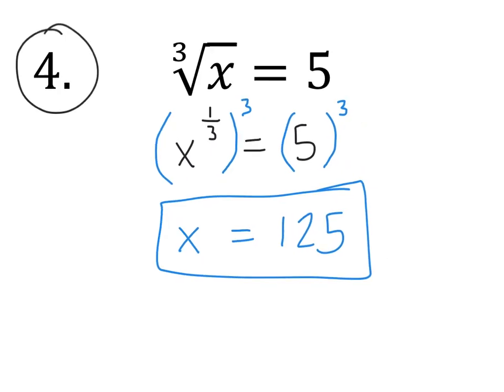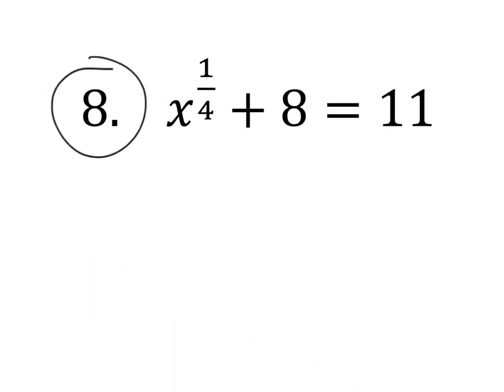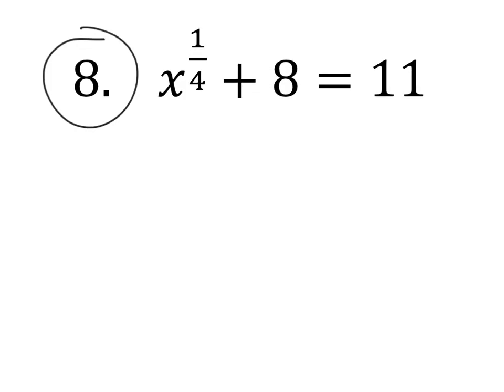Let's look at one more problem, one that takes just a couple more steps. So this time we have x to the one fourth plus 8 equals 11. The first thing we want to do in a problem like this is get the x term by itself. So we need to get the plus 8 out of there. Do that by subtracting 8 from both sides. That tells us that x to the one fourth equals 3, since 11 minus 8 is 3.